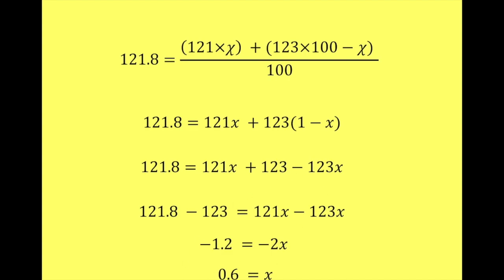So what we can do with that now is we can take that 0.6 back up to here, 121 times 0.6. So 121 times 0.6 plus 123, 1 minus 0.4 equals 121.8. So that proves that x is 0.6 or 60% and y is 0.4 or 40%. And that is the answer.